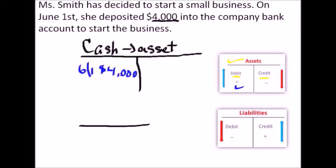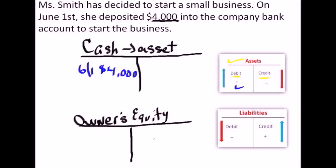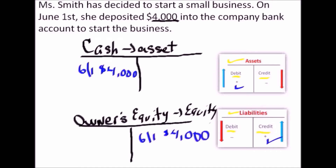Now this has to balance, so we have to use another t-account — this is considered a double entry. Most companies use this type of accounting. It has to have a debit on one side and a credit on the other side. This account is called owner's equity. Owner's equity is an equity account. For purposes of journal entry it's treated similar to a liability — a debit means it's going down, a credit means it's going up. In this instance we have $4,000 being added to the account. It's going up, so it's a credit. We put down the date and the amount: $4,000. And as you can see, we balanced it.